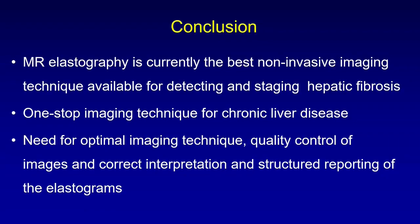To conclude, MR elastography is currently the best non-invasive imaging available for detecting and staging hepatic fibrosis. It is a one-stop imaging technique — for chronic liver disease cases already undergoing MR, an MRE sequence can be added to obtain more information. There is a need for optimal imaging technique, high quality control, correct interpretation, and a structured reporting pattern to make MRE viable and reproducible. A checklist for radiographers is recommended, and ideally a radiologist should be present with the radiographer to ensure MRE acquisitions are of diagnostic quality. Thank you.